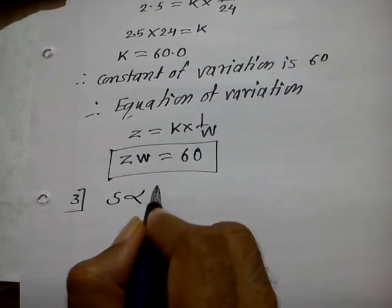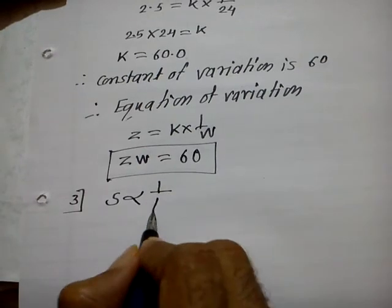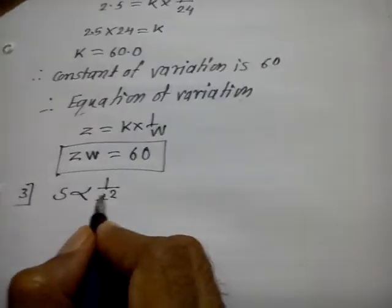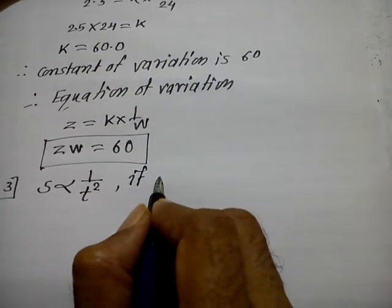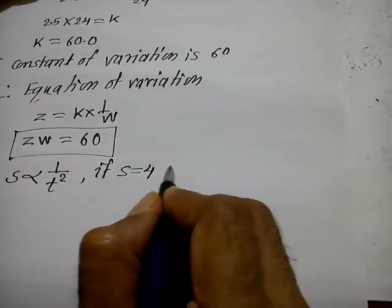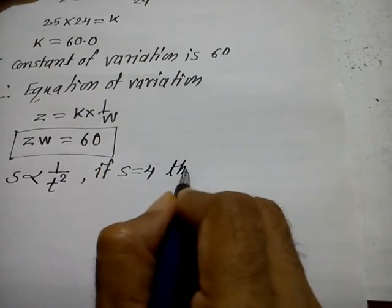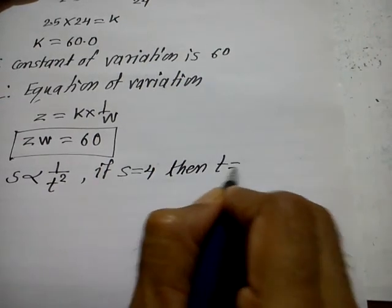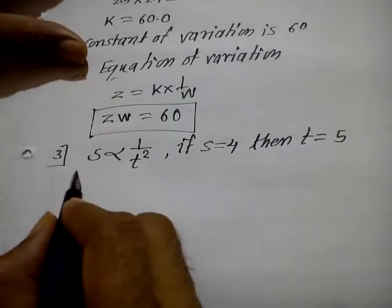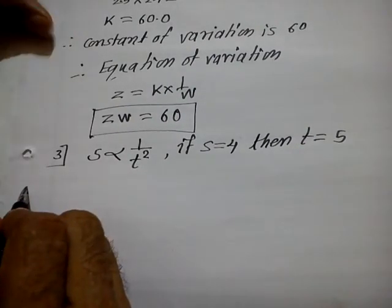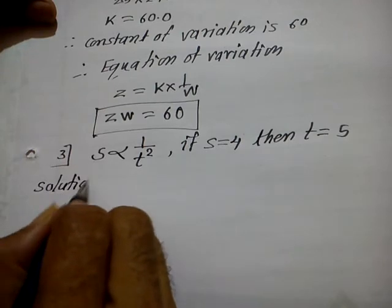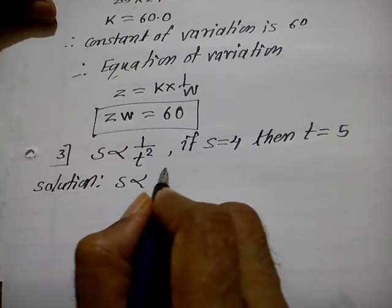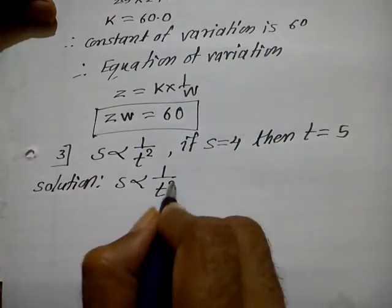Example 3: s is inversely proportional to t squared. If s is equal to 4, then t is equal to 5. Check the answer carefully — if it's wrong, the answer will be wrong. We need to solve it using the correct method.